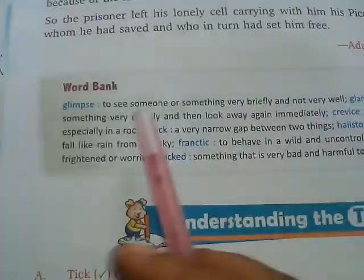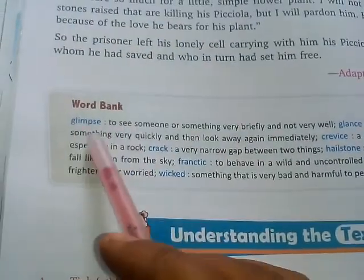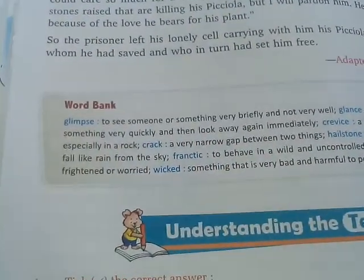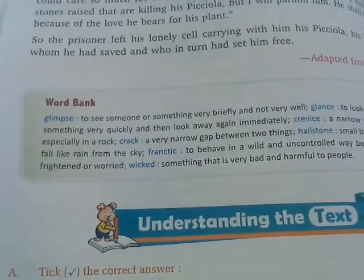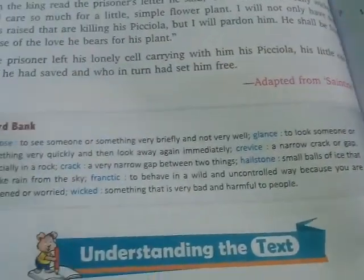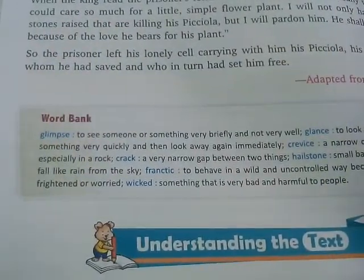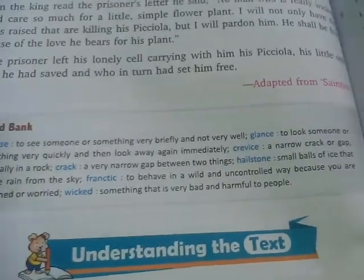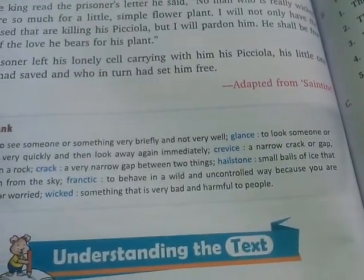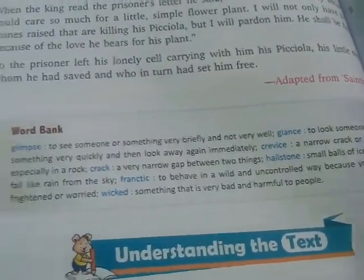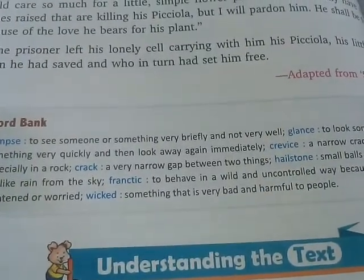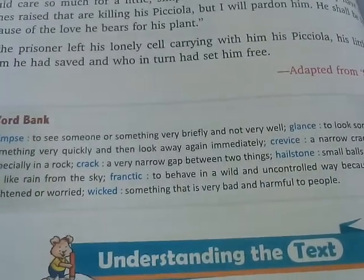Here is a word bank: Glimpse — to see someone or something very briefly, not very well. Glance — to look at someone or something very quickly. Crevice — a very narrow crack or gap.